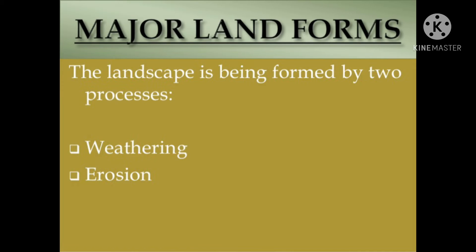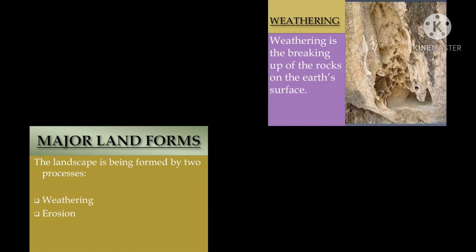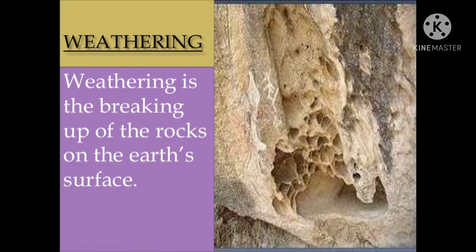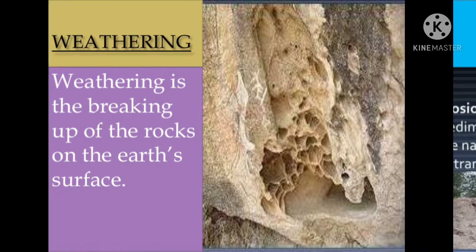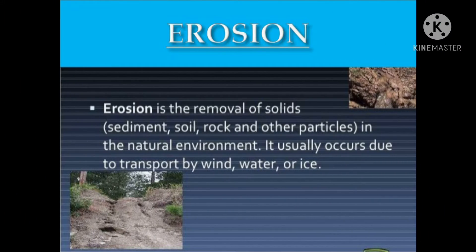These landforms are formed by two types of processes. The first one is weathering and the second one is erosion. Weathering is the breaking up of the rocks on the earth's surface. Erosion is the removal of solids in the natural environment; it usually occurs due to transport by wind, water, and ice. This process of erosion and deposition creates different landforms on the surface of the earth.